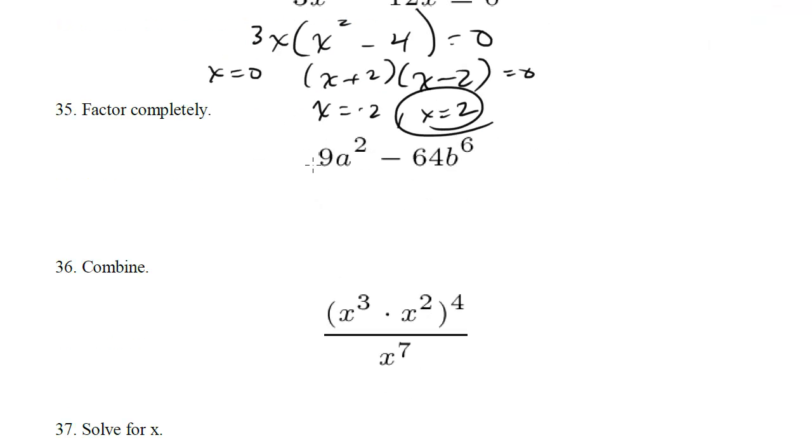Factor completely. Whenever you see the difference of two perfect squares, remember the shortcut. We need to have two factors that multiply out to this. Remember the middle term is going to cancel, so we want to have a plus and a minus.